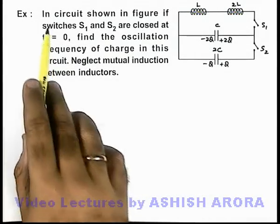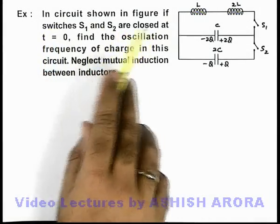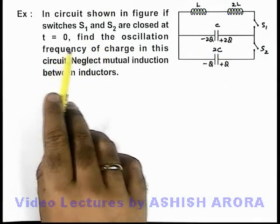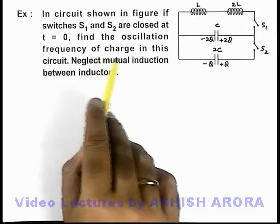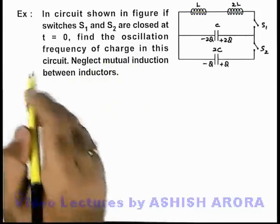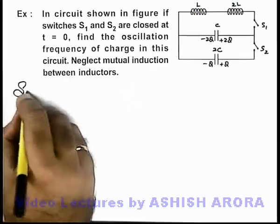In this example, we are given a circuit where switches S1 and S2 are closed at t=0. We need to find the oscillation frequency of charge in this circuit. We are told to neglect mutual induction between the inductors.